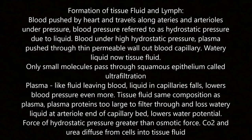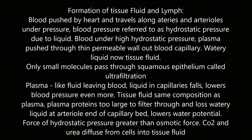Formation of tissue fluid and lymph: blood is pushed by the heart along arteries and arterioles under hydrostatic pressure. Under high hydrostatic pressure, plasma is pushed through the thin, permeable capillary wall out of the blood capillary; this watery liquid is called tissue fluid. Only small molecules pass through the epithelium — this is called ultrafiltration. Plasma proteins are too large to filter through. Loss of watery liquid at the arterial end of the capillary bed lowers the water potential inside the capillary.